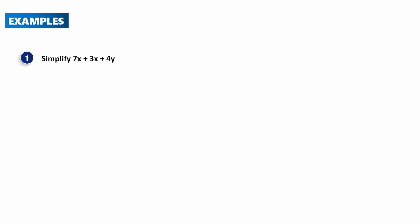Question 1: Simplify 7x + 3x + 4y. The first step is to look for the like terms and group them together. We can simplify 7x and 3x, giving 10x. Then we just add the 4y because x and y are different variables, so we cannot simplify further. The final answer is 10x + 4y.